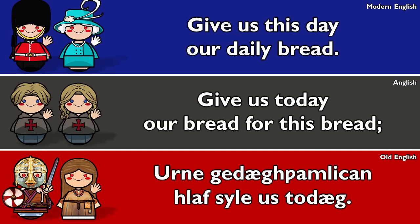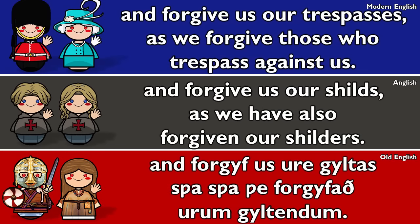Modern English: 'Give us this day our daily bread.' Anglish: 'Give us today our bread for this day.' Old English: 'Urne yeday huamlikon hlaf, sule us today.' Modern English: 'And forgive us our trespasses, as we forgive those who trespass against us.' Anglish: 'And forgive us our shields, as we have also forgiven our shielders.'